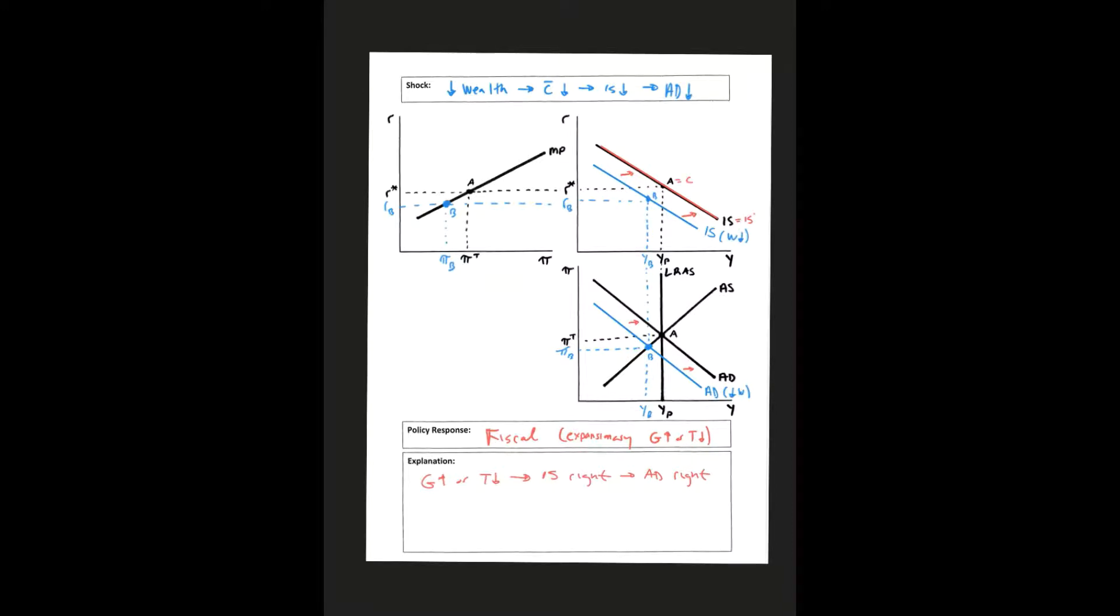And the same exact thing with aggregate demand here, we try and bring aggregate demand back to where it was before. So this would be aggregate demand prime, and this would be A equals C.